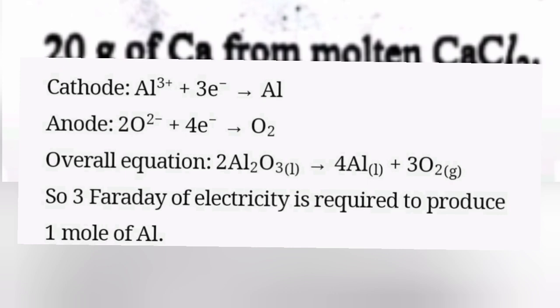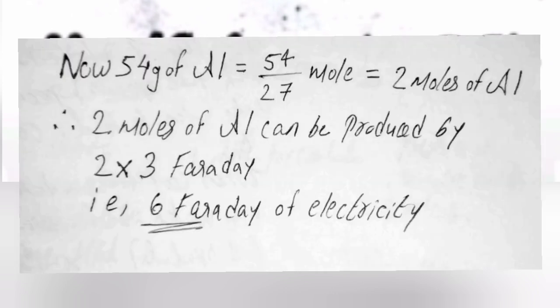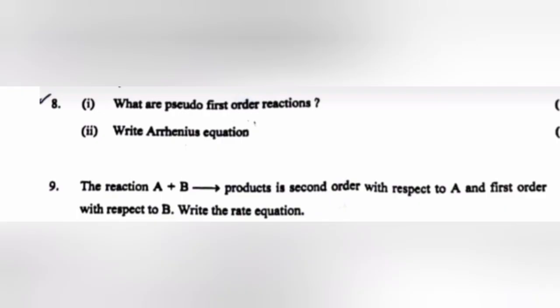So, 3 Faraday of electricity is required to produce 1 mol of aluminium. Now, 54g of aluminium equals 54/27 mol = 2 mols of aluminium. Therefore, 2 mols of aluminium can be produced by 2 × 3 Faraday, that is, 6 Faraday of electricity.